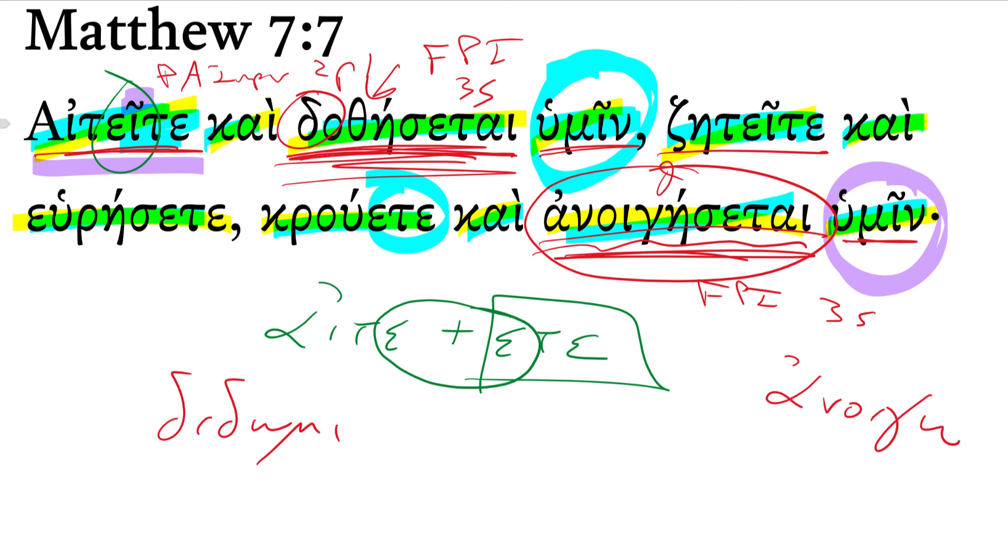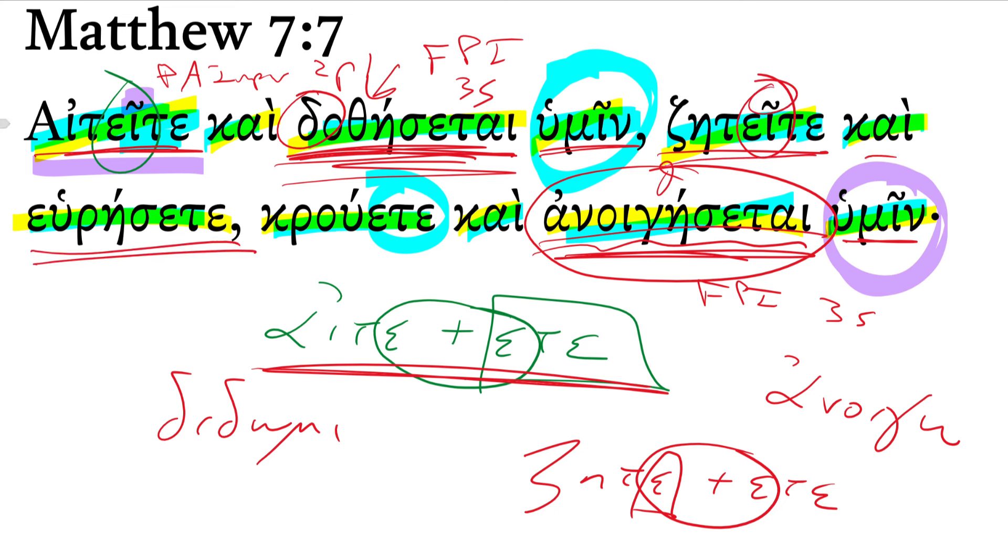The zēteite, you can see very similar, the same thing is going on that happened with aiteo. This is from the verb zētaō, to seek. This is also an epsilon contract verb. So when we have that present imperative ending, eta, come in, those epsilons and epsilons combine to be a, marked with the circumflex, seek and you will find. That's just a future of heuriskō.